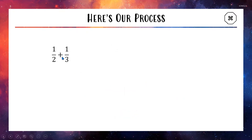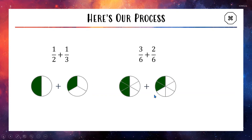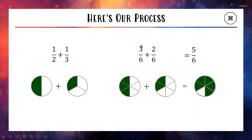It's a little bit trickier when the numbers on the bottom don't match, like with 1 over 2 and 1 over 3. Our process is: when the denominators don't match, we do a bit of math to change the fractions so the bottoms match. We rewrite 1 half as 3 out of 6 and 1 third as 2 out of 6, using equivalent fractions. Now the numbers on the bottom are the same, we can add the tops and get the correct answer of 5 out of 6.